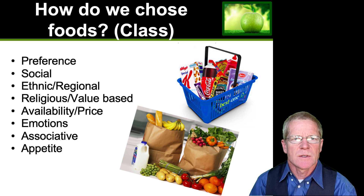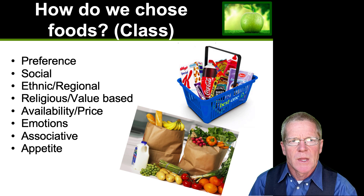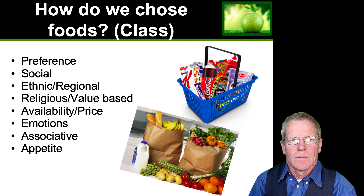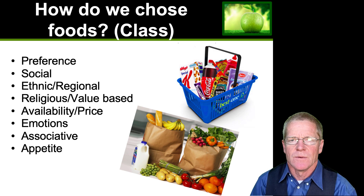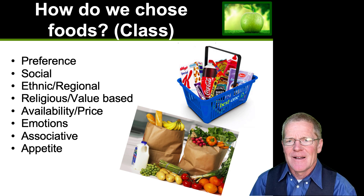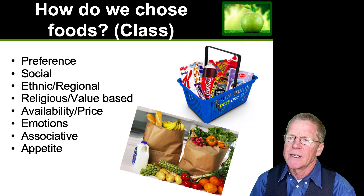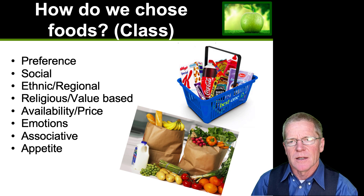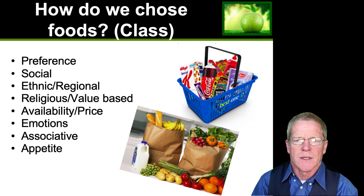Price and availability is a huge one for college students. It is possible to eat a healthy diet on a budget, and we'll talk a little bit about that. Emotional eating is another factor — most of us have some sort of emotional connection to food. For example, when I'm feeling down, I love to reach for a bar of chocolate. Associative eating is another way we make choices — if you go to a baseball game, you probably associate it with eating a hot dog.